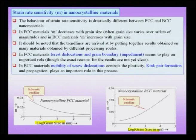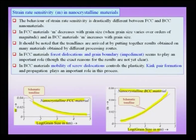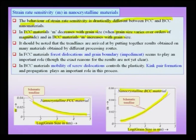At high temperatures, high strain rate sensitivity m is expected for super plastic behavior. The super plastic regime in a log stress vs. log strain rate plot corresponds to m values between about 0.4 and 0.67. Now, plotting strain rate sensitivity as a function of grain size in the nano scale regime, for FCC nano-crystalline materials the strain rate sensitivity decreases with increasing grain size, while for BCC nano-crystalline material like iron, the strain rate sensitivity actually increases with increasing grain size — exactly opposite behavior.